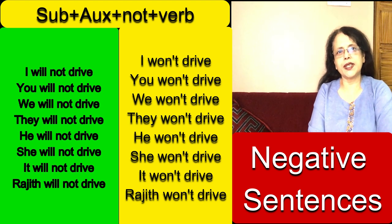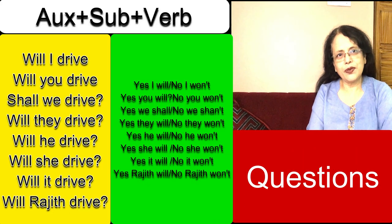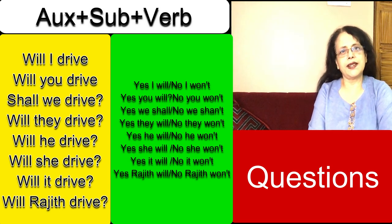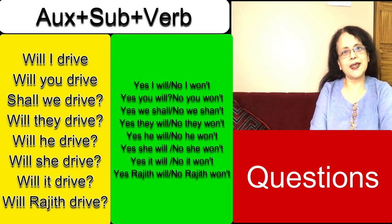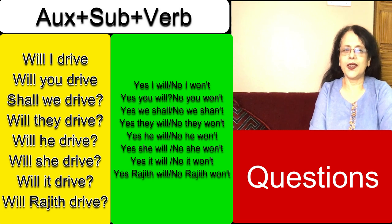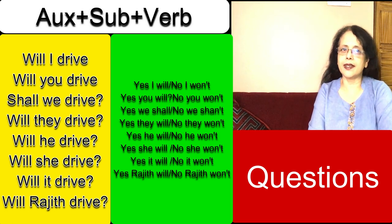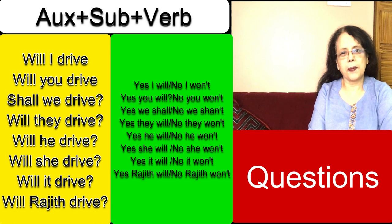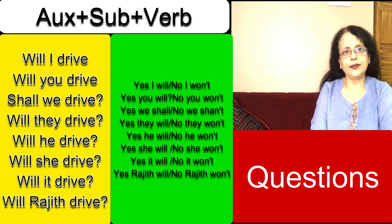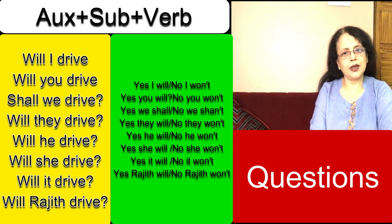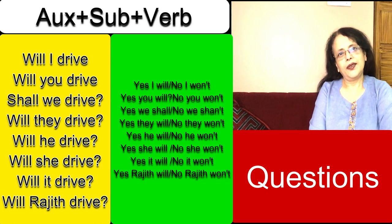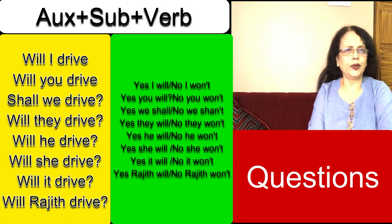Now let's make interrogative sentences or questions. The structure will be auxiliary verb plus subject plus base form of the verb. Will I drive? The answer could be I will or I won't. Will you drive? You will or you won't. Shall we drive? Yes, we shall. No, we shan't. The short form of shall not is shan't. Will they drive? Yes, they will. No, they won't. Will she drive? Yes, she will. No, she won't. Will he drive? Yes, he will. No, he won't. Will it drive? Yes, it will. No, it won't. Will Rajit drive? Yes, Rajit will. No, Rajit won't.